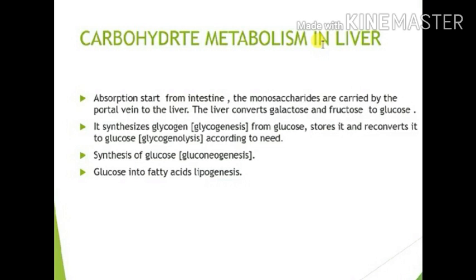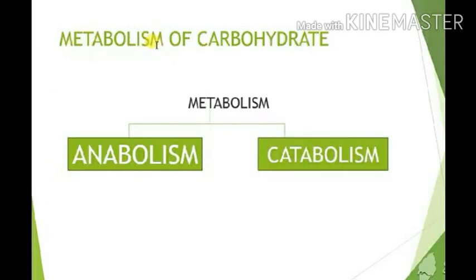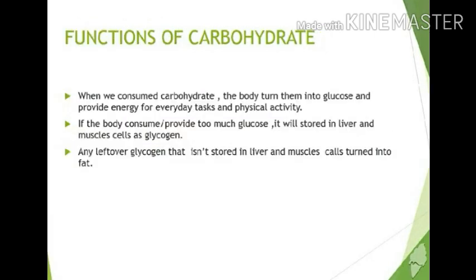Carbohydrate metabolism in the liver: absorption starts from the intestine and the monosaccharides are carried by the portal vein to the liver. The liver synthesizes glycogen from glucose, stores it, and reconverts it into glucose. Synthesis of glucose into fatty acids is known as lipogenesis. There are two types of metabolism: anabolism and catabolism.